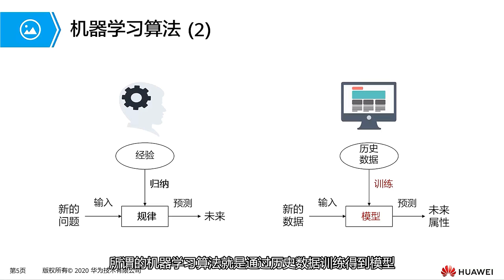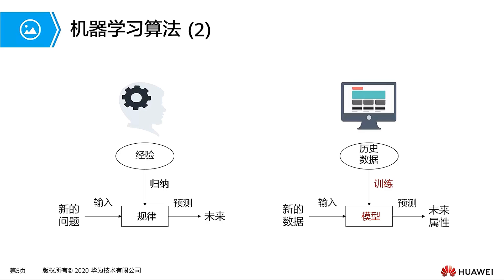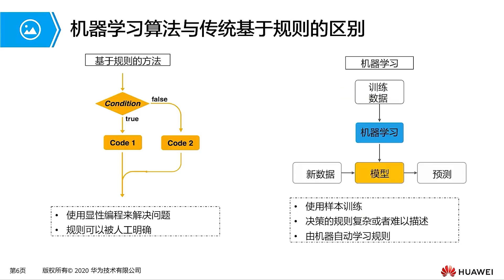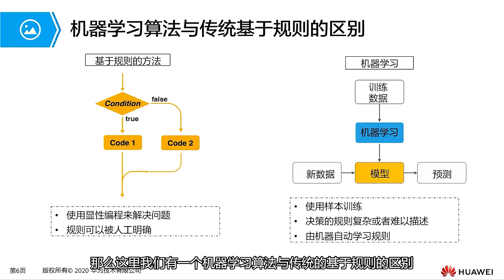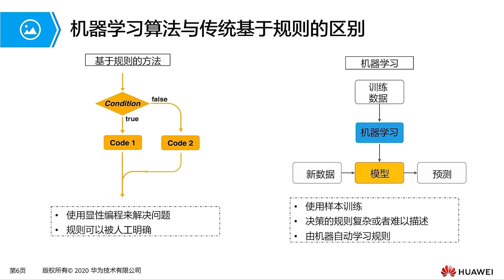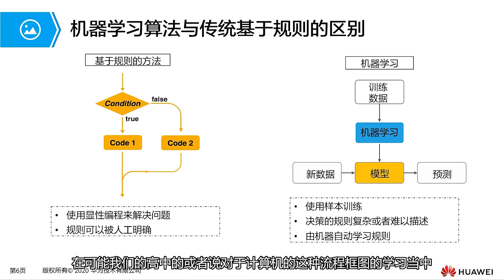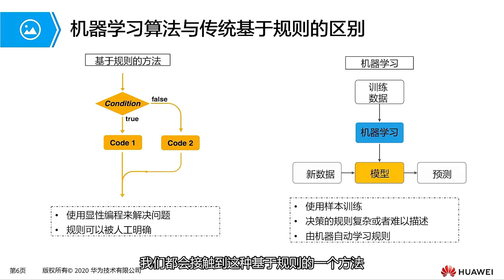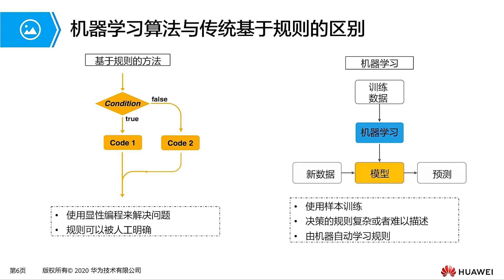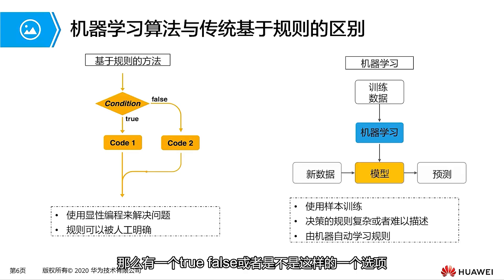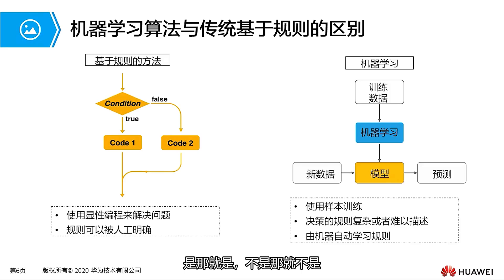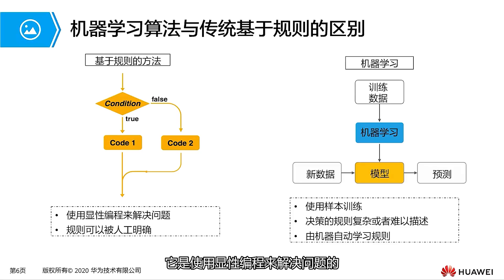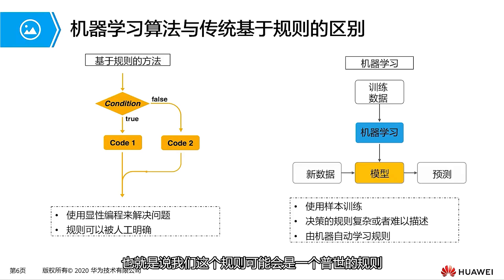Here we have a distinction between a machine learning algorithm and a traditional rule-based one. The flow chart on the left represents a rule-based method — something we may have encountered in high school. We use this rule-based method in our lives to judge, for example, are you a boy or a girl? There is a true or false option. This kind of rule uses explicit programming to solve problems. Such a rule can be universally defined by humans to solve many problems.